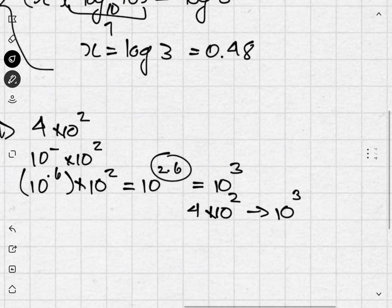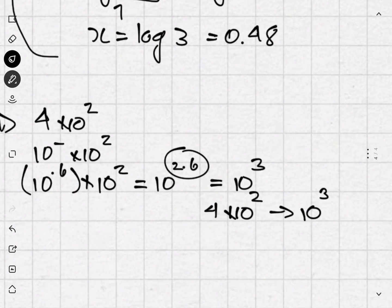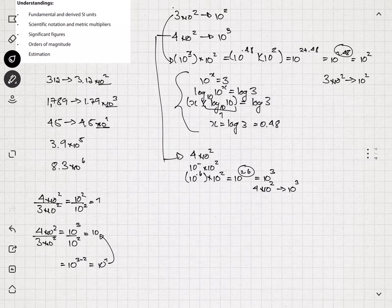But 4 is not. If we rewrite 4 in terms of orders of magnitude, we do the same log calculation: log of 4 gives us approximately 0.6. So 10 to the 0.6 — which equals 4 — times 10 to the 2 gives us 10 to the 2.6, which actually rounds to 10 to the power of 3. So 4 times 10 to the power of 2 — the closest order of magnitude — is 10 to the power of 3. You just have to rewrite that 4 in terms of 10 to the power of something. Very counterintuitive, but that's what it is.